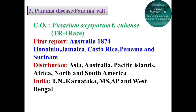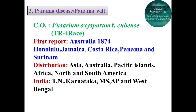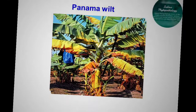The next type of wilt is Panama wilt, a fungal wilt caused by Fusarium oxysporum f. sp. cubense. The first report of this Fusarium was given in Australia in 1874, and it is now widely distributed worldwide. The most prominent symptom is sudden wilting of the plant or individual leaves. Unlike bacterial wilt, there is no bacterial ooze in Fusarium wilt — this helps differentiate the two.